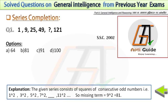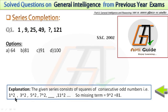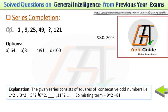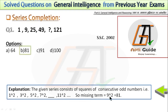In the first question, the series is 1, 9, 25, 49, then there is a missing term, after that 121, which came in SSC 2002. In the explanation box, I have shown the pattern of this series. This is a consecutive odd number square series: 1 squared is 1, 3 squared is 9, 5 squared is 25, 7 squared is 49. After 7, the next consecutive odd number is 9, so the missing term will be 9 squared, which is 81. The correct answer is 81.